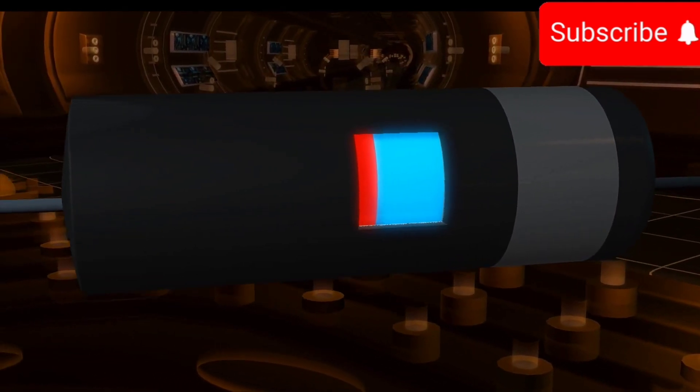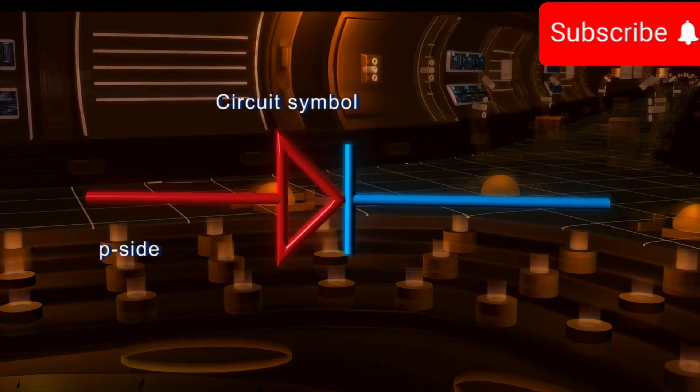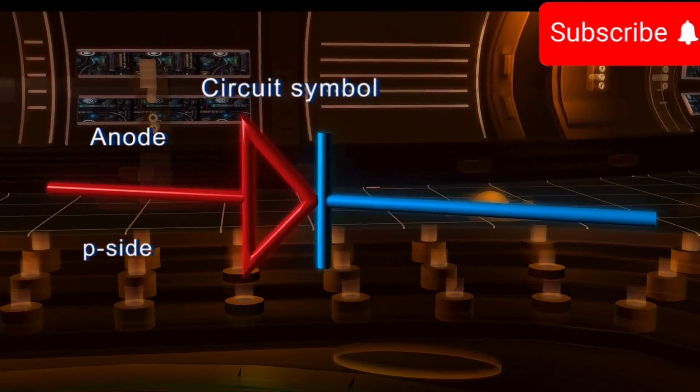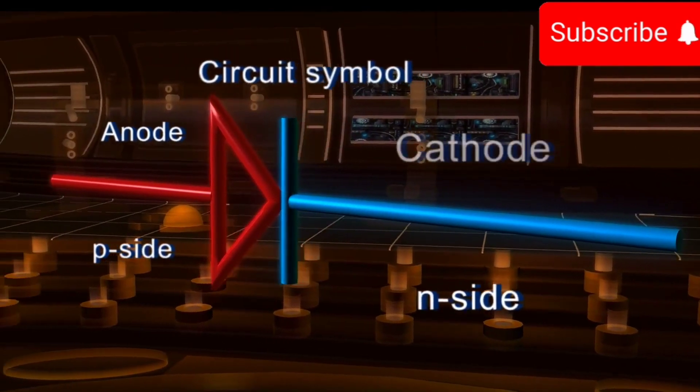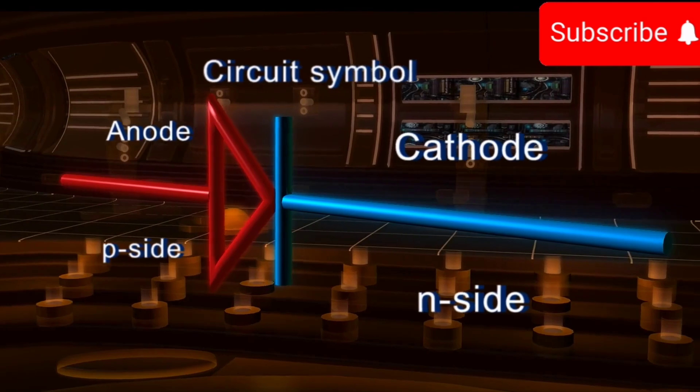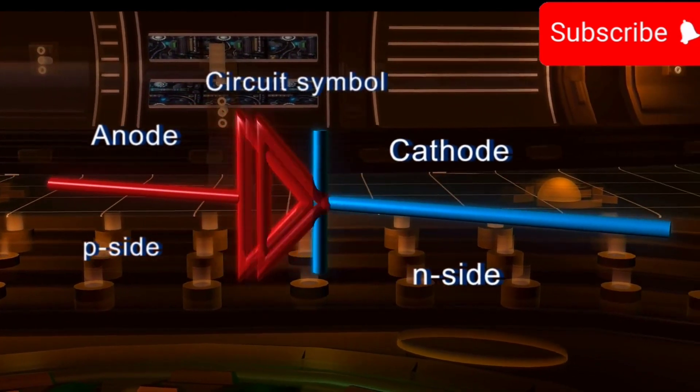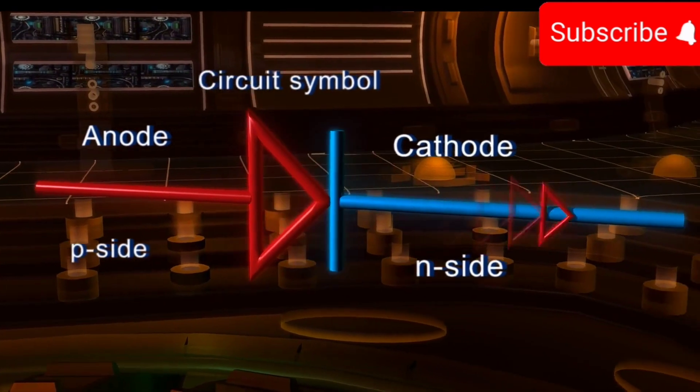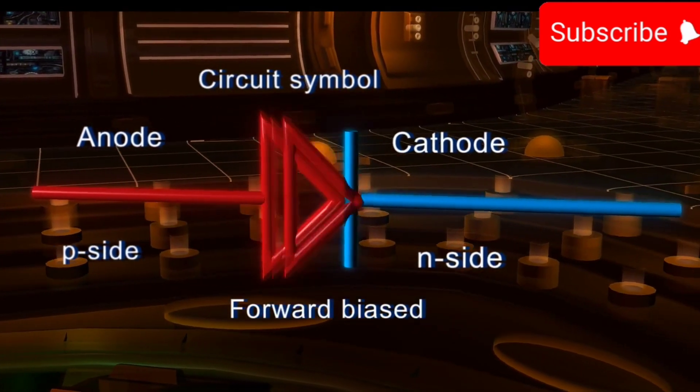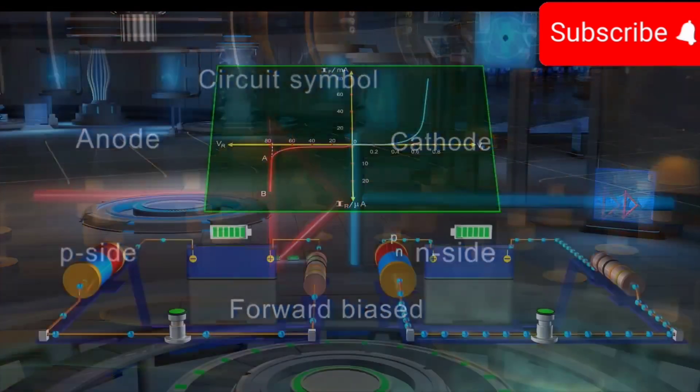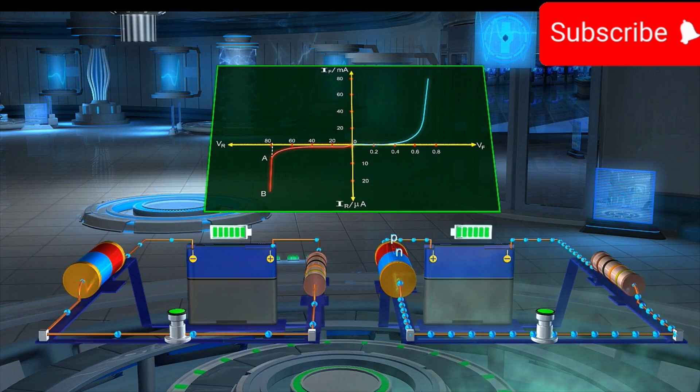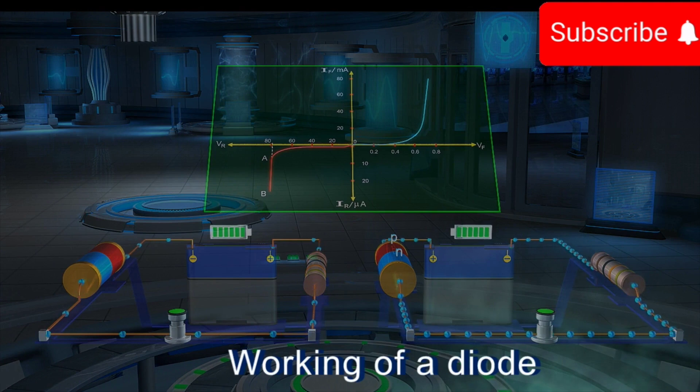Its circuit symbol is as follows. The P side is known as an anode and the N side is known as a cathode. The direction of the arrow is from P region to N region and it indicates the direction in which the current flows when the diode is forward biased. Next, we will discuss what happens when a battery is connected to a P-N junction in our next topic, working of a diode.